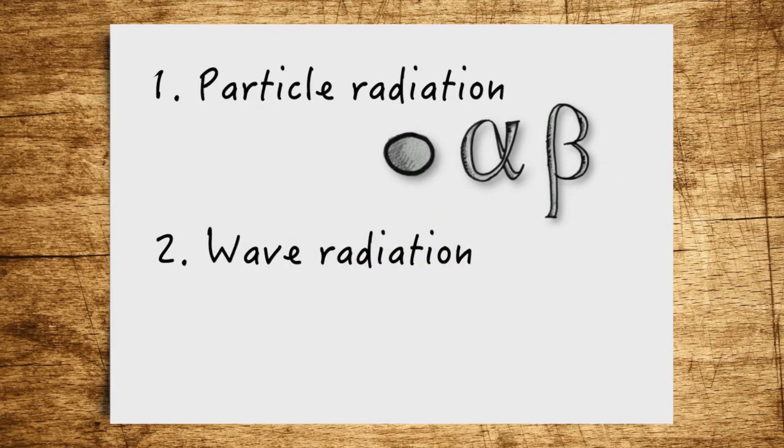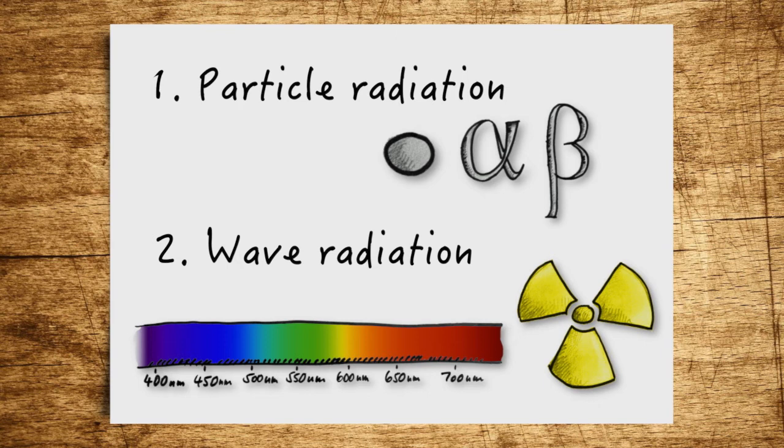Both visible light, that is light we can see, as well as X-rays are types of wave radiation. X-rays are a type of light ray, but with much shorter wavelengths that are outside the visible spectrum.